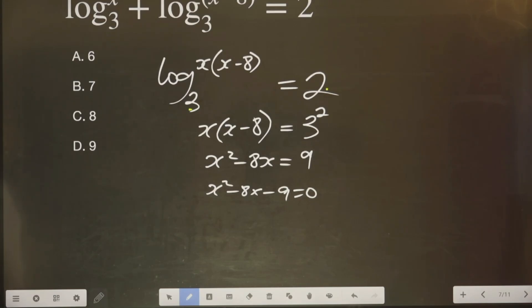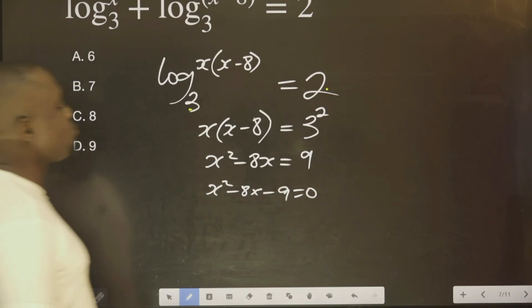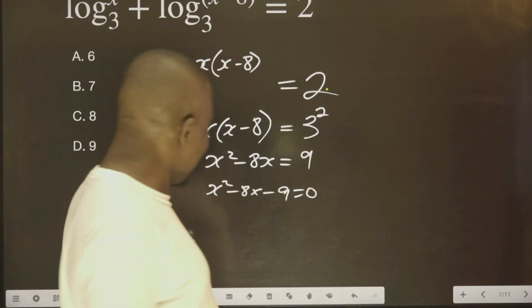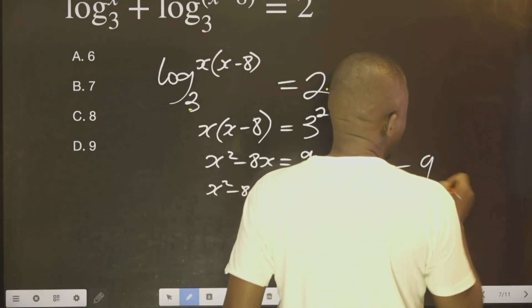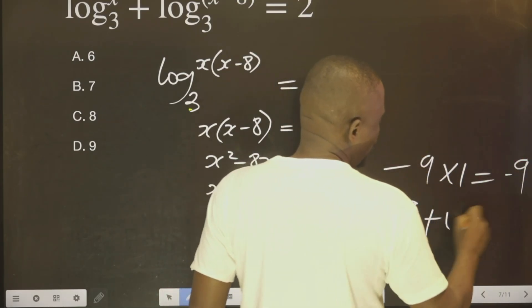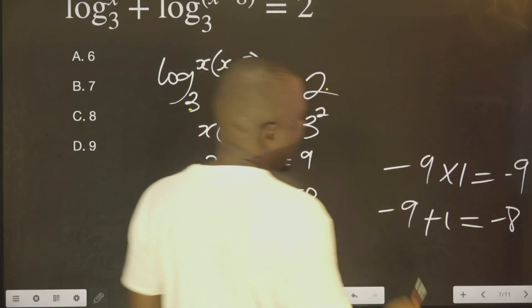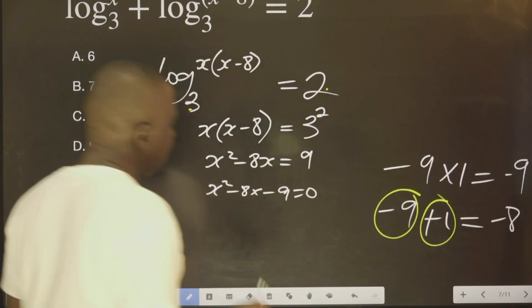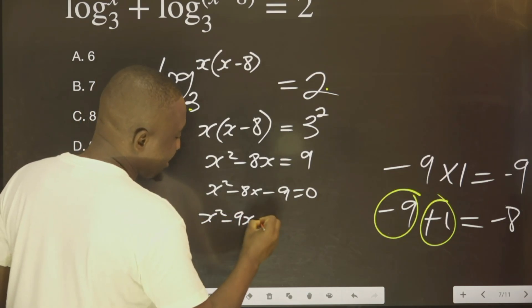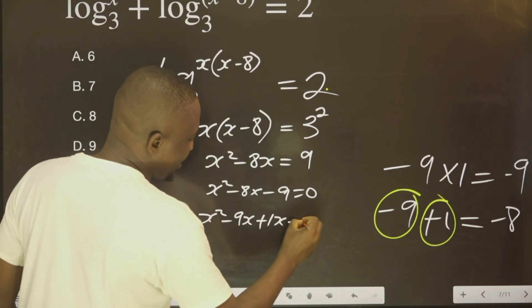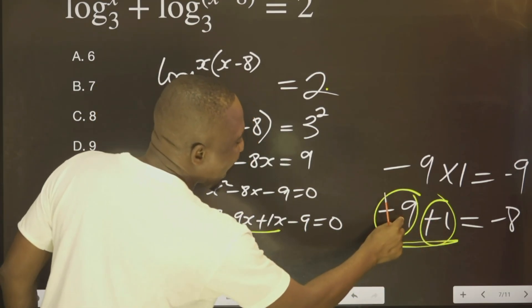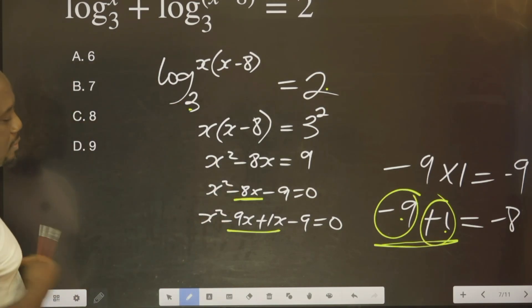The next thing is, what are the two values? If you multiply them together, you have minus 9. When you add them, you have minus 8. You agree with me, minus 9 multiplied by 1 will give us minus 9. Minus 9 plus 1 equals to minus 8. So we can use this and this. Therefore, we are going to have x² minus 9x plus 1x minus 9 equal to 0. So we are now using this 9 and 1 to replace this. Okay?